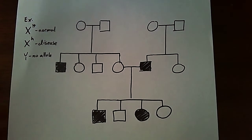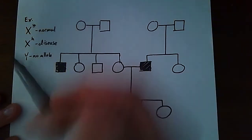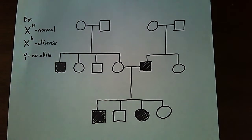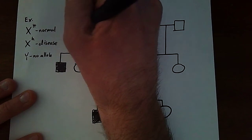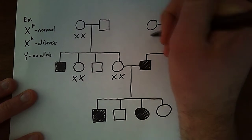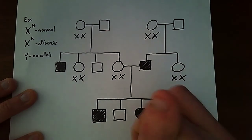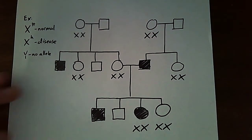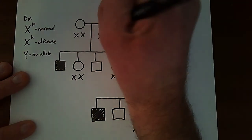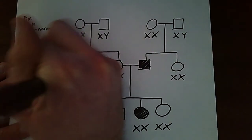Not even worrying about alleles at first. If this is sex-linked inheritance where there's going to be a difference between males and females because something's carried on the X chromosome but not on the Y chromosome, first I'm going to identify males and females by their chromosomes. Circles are females, so any circle is going to be XX. Any square is going to be a male — X chromosome and then a Y chromosome.